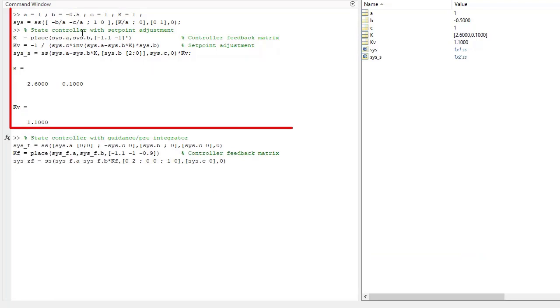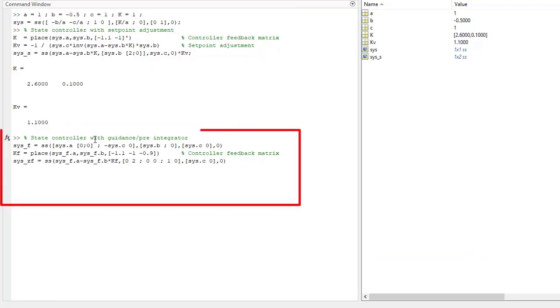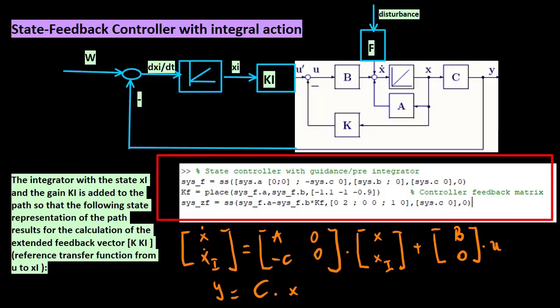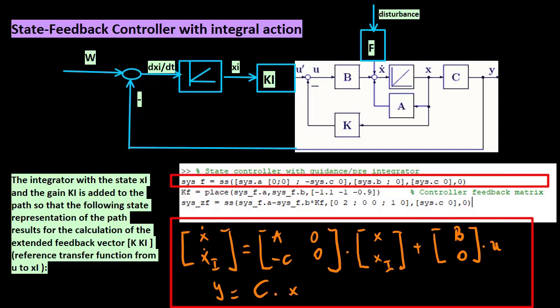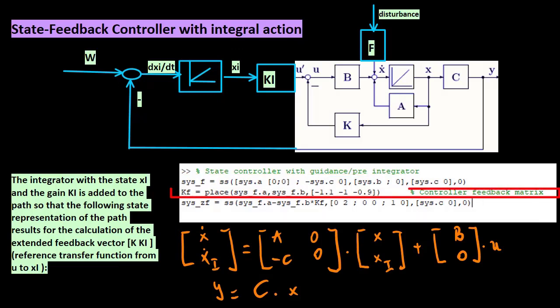Now, before we plot this for the state controller with setpoint adjustment, we calculate the state controller with preintegrator, or with the integral action. The integrator with the states, xi, and the gain, ki, is added to the path, so that the following state representation of the path results for the calculation of the extended feedback vector, k, ka.